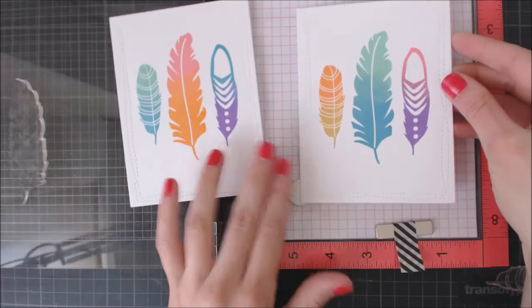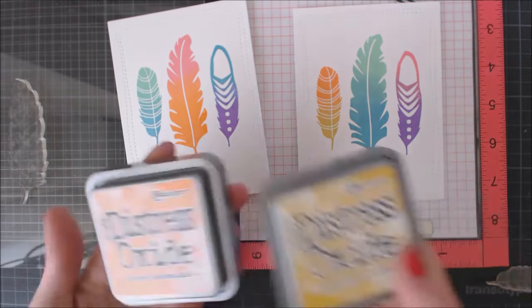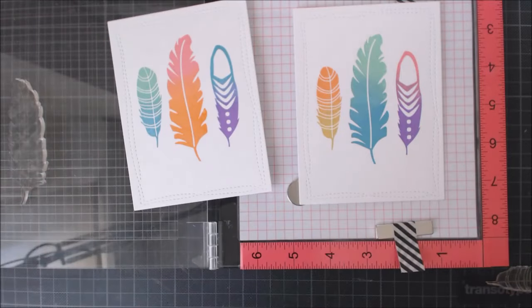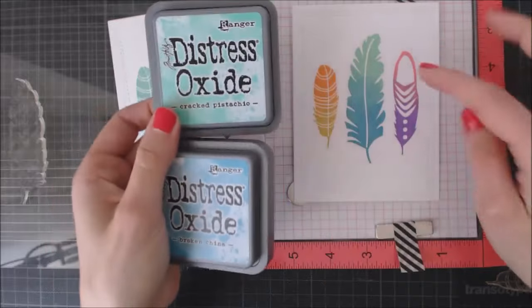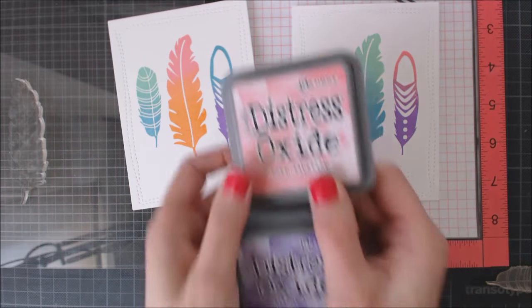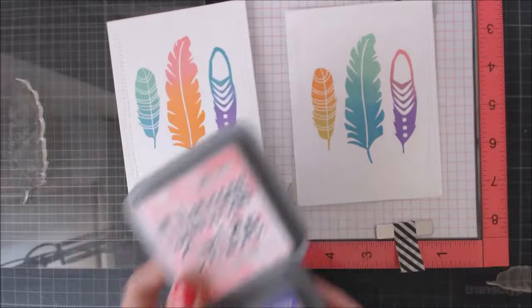Here I have another example using different color combinations. I used Fossilized Amber and Spiced Marmalade for my first feather, Cracked Pistachio and Broken China for the feather in the middle, and Worn Lipstick and Wilted Violet for the one on the right.